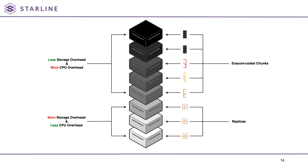Replication is more expensive disk space-wise because from each object you need to create an X number of copies — three, four, or five. Erasure coding is more expensive CPU-wise because it is a calculation process requiring more CPU time. This is basically how Ceph protects your data: it either replicates or fragments it among the highest possible number of OSDs. In case one or more OSDs fail, a copy of your data would always still be there, accessible or recoverable. When planning your Ceph cluster, it's very important to take note of those storage and computational overheads.